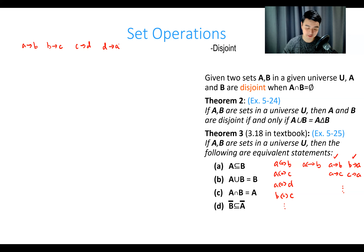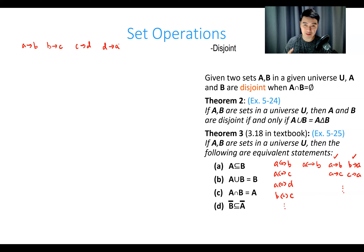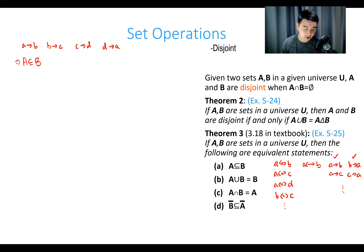Once we prove those four implications, through syllogism everything implies everything. So the proof strategy is to start from statement A, go through a sequence of one-directional steps, and end back at the same statement. All arguments go in one direction — implies, implies, implies — even though the opposite directions may also be true.